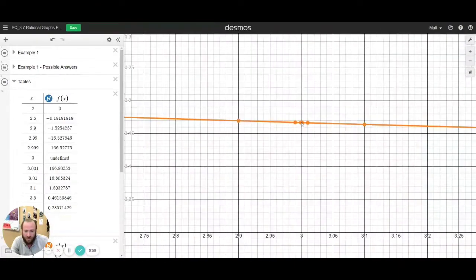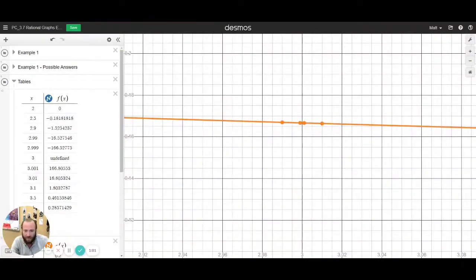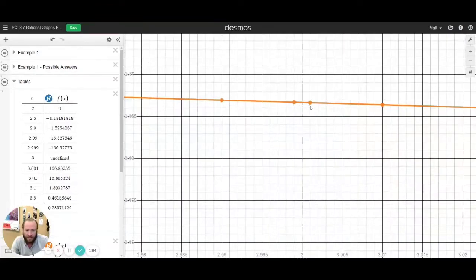watch as we zoom in close to the orange graph, which is g of x, and you can see it still looks like it's continuous, but if we drag our point here, it says it's undefined.